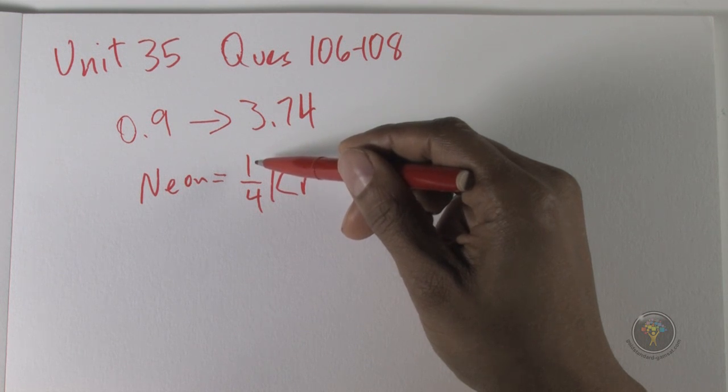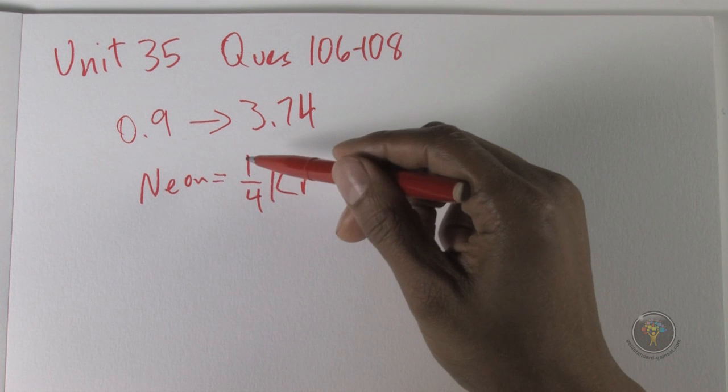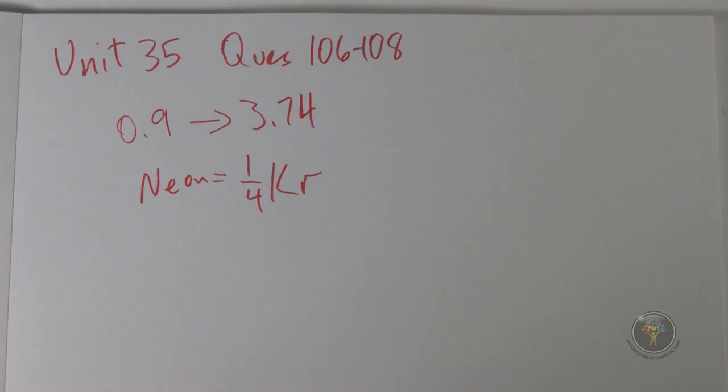Square root of four is two, and then it's the opposite because it's inverse as the relationship has been given to us. Then neon will have twice the diffusion of krypton.